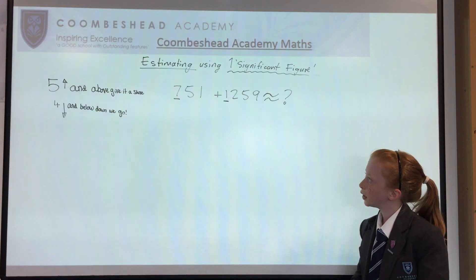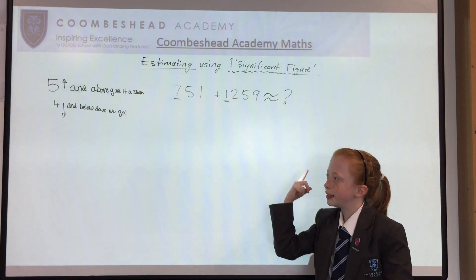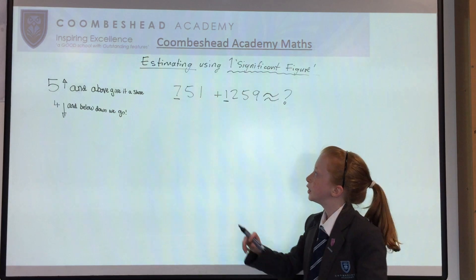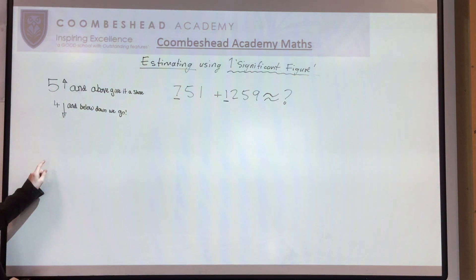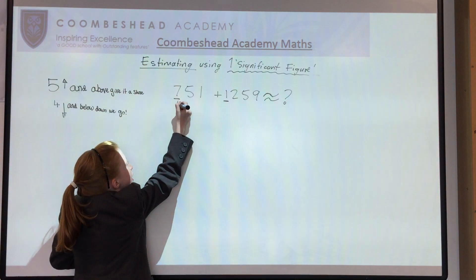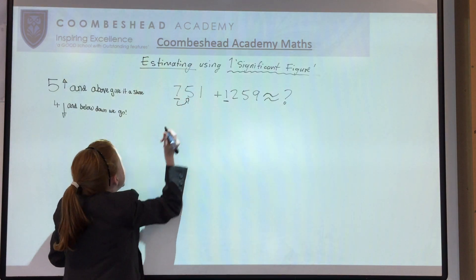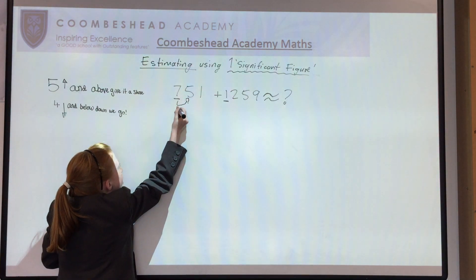To estimate, we're going to round to the first significant figure. So it's 700, and we have a little saying to help us remember: 5 and above, give it a shove; 4 below and down it goes. So we have 700 and we look to the next number, which is a 5, so it goes up to 800.